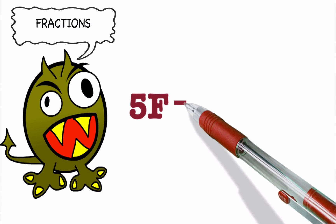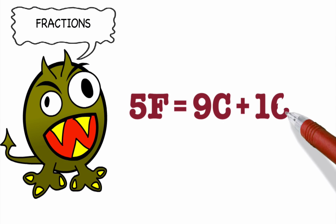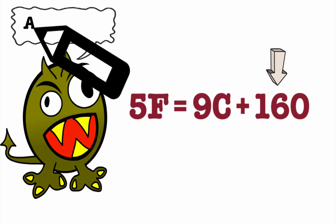So let's use some mathemagic and change this formula to make it more readable. Here we go: 5F equals 9C plus 160. The fractions have gone and 32 has changed to 160, but it's easier to remember for sure.